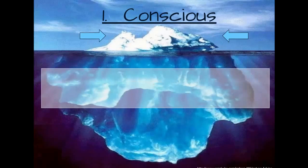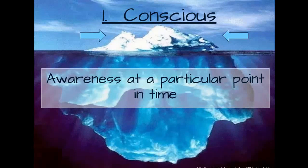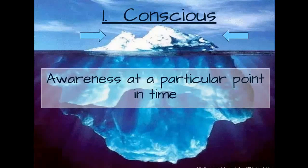The first level is the conscious mind — the top of the iceberg, the part that sits above the surface of the water, the part we can see at any given point in time. When we're talking about the conscious mind, we're talking about a person's awareness at a particular point in time. Anything going on in a person's mental state at that moment — the things he hears, sees, smells, the things he's thinking about, anything internal or external — would be considered part of the conscious mind.